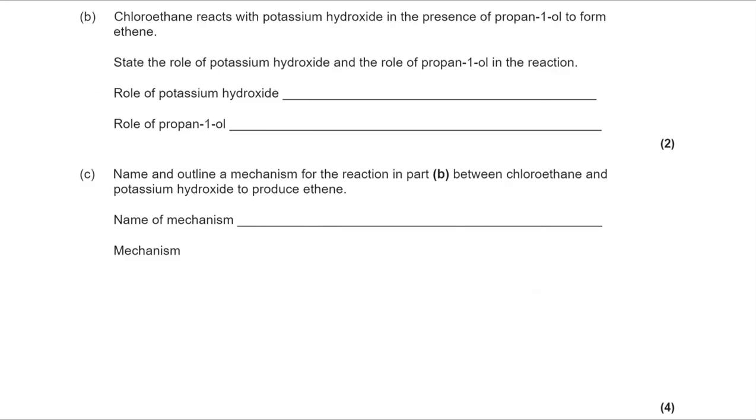Moving on to part B, chloroethane reacts with potassium hydroxide in the presence of propan-1-ol to form ethene. State the role of the potassium hydroxide and the role of the propan-1-ol in the reaction.